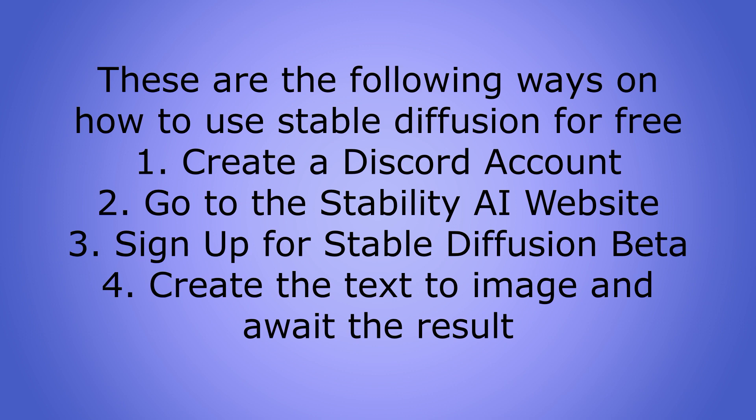These are the following ways on how to use Stable Diffusion for free: 1. Create a Discord account. 2. Go to the Stability AI website. 3. Sign up for Stable Diffusion Beta. 4. Create the text-to-image and await the result.